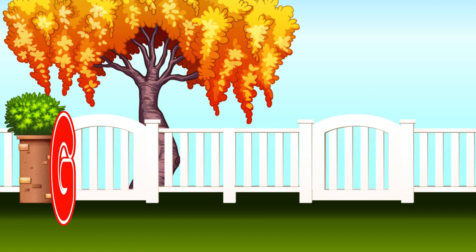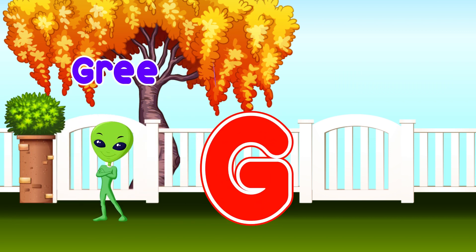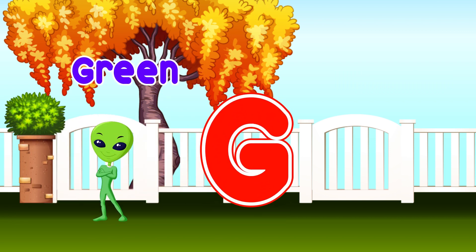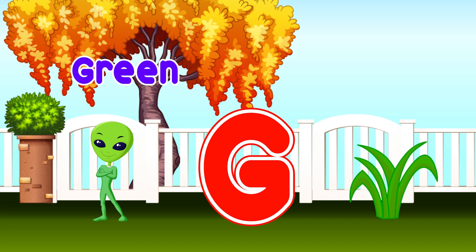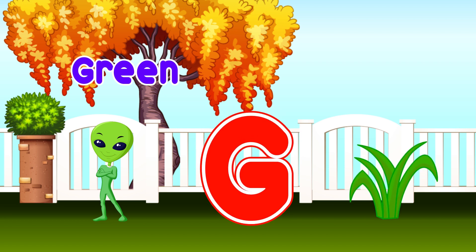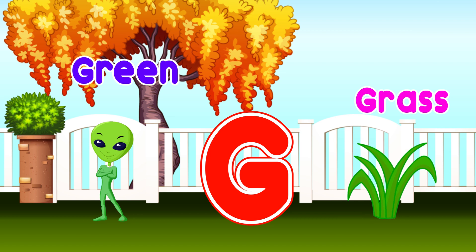G is for green. G, G, green. G is for grass. G, G, grass. G is for G, G, G, green. G is for G, G, G, grass.